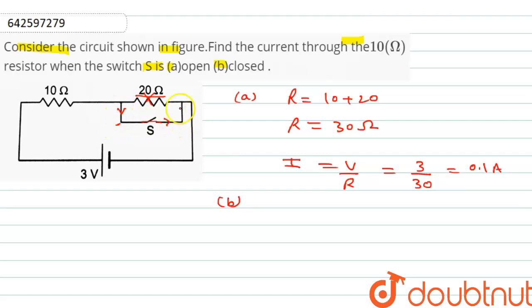So current will go from this path, due to which the net resistance R will be equal to 10 ohms. We can write I equals V upon R, where V is 3 volts and R is 10 ohms. So the current is 0.3 ampere.